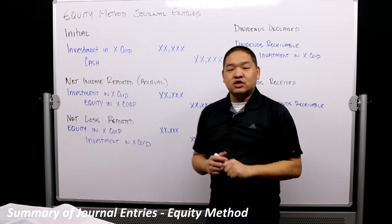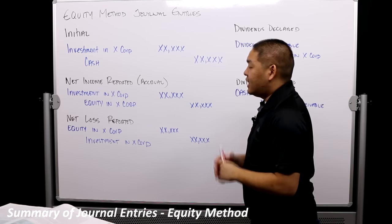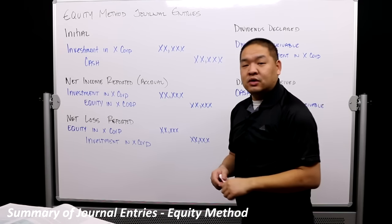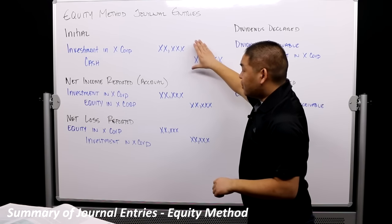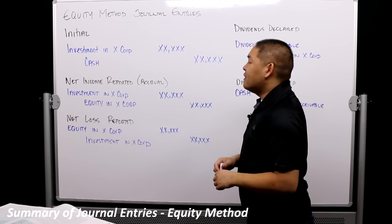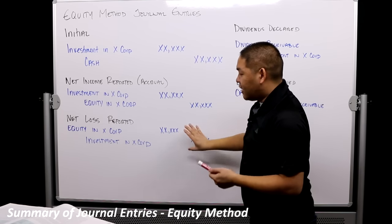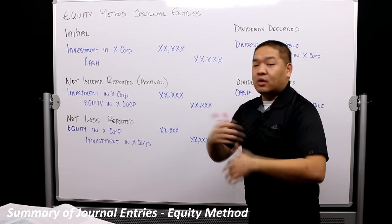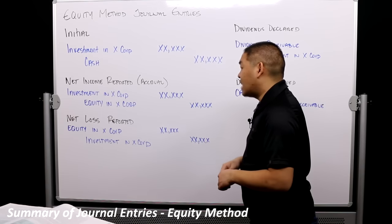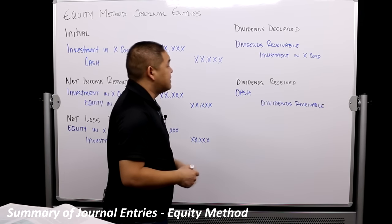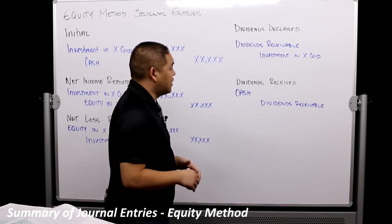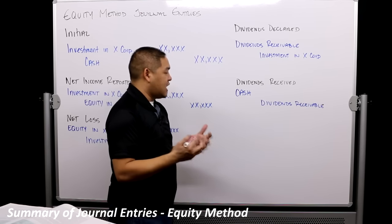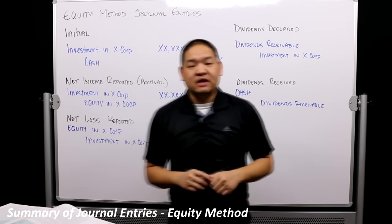Those are the journal entries you'll encounter with the equity method — these are the building blocks. The initial entry: debit Investment in X Corp, credit Cash. If net income or net loss is reported, either debit or credit Investment with the corresponding entry to Equity. When a dividend is declared: debit Dividends Receivable, credit Investment in X Corp. And when dividends are received: debit Cash, credit Dividends Receivable.